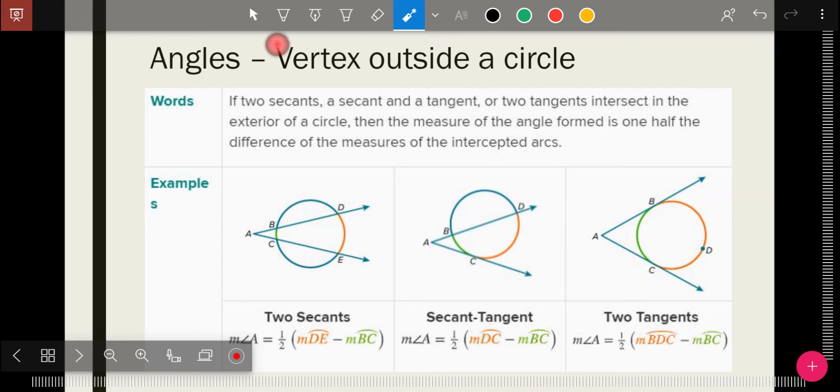When the vertex is outside the circle, this has its own rule. It could be all kinds of things here. In this case, a couple secants, a secant and a tangent, or a couple tangents. In any of these cases, the vertex, which is point A in all three examples, is the arcs subtracted. So the measure of the angle is arc one minus arc two divided by two.